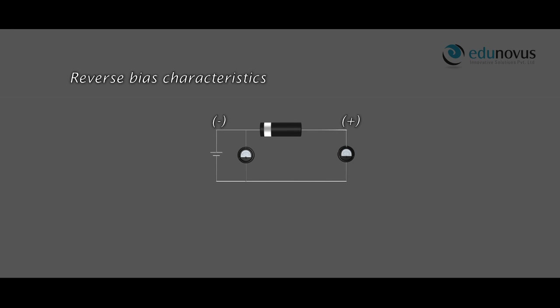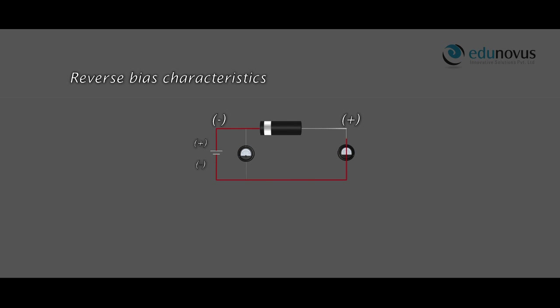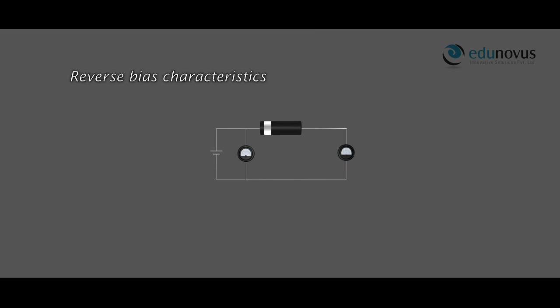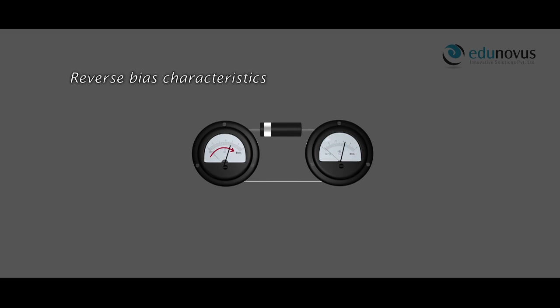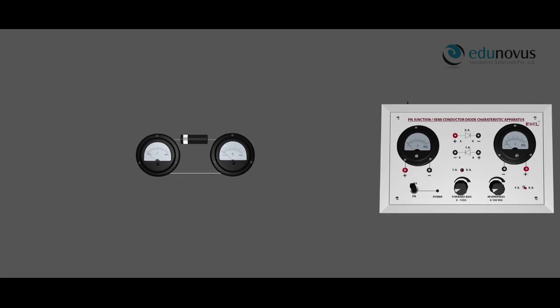Now let us move on to the reverse bias characteristics. When the P section is connected to the negative terminal and the N section is connected to the positive terminal of the battery, the PN junction is said to be in reverse bias. With the increase in reverse bias voltage, a very small reverse current flows which remains almost constant. When the reverse bias voltage V equals the reverse breakdown voltage, the reverse current suddenly increases to a large value.